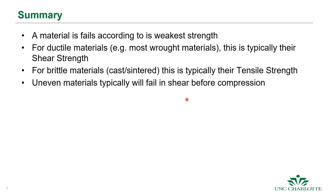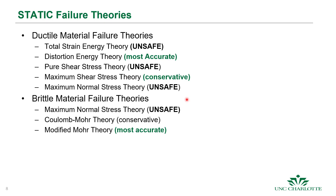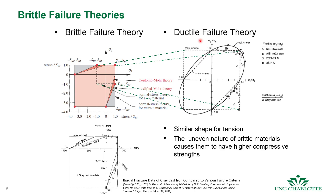A material fails according to its weakest strength, whether shear or tensile. For ductile materials it's typically shear strength; for brittle materials it's typically tensile strength. There are a number of theories developed over the years; for ductile materials we derived the distortion energy (von Mises) theory. For brittle materials we have different theories, and the one that best matches experimental data is the modified Mohr theory.